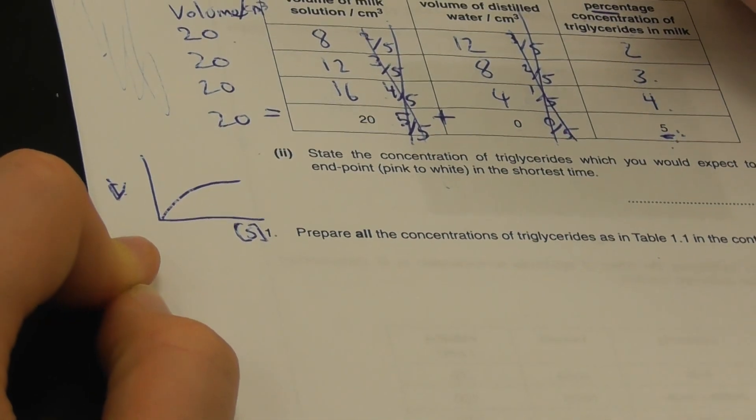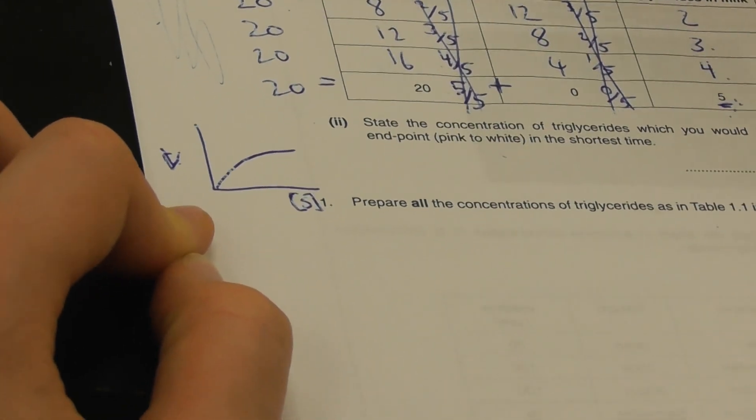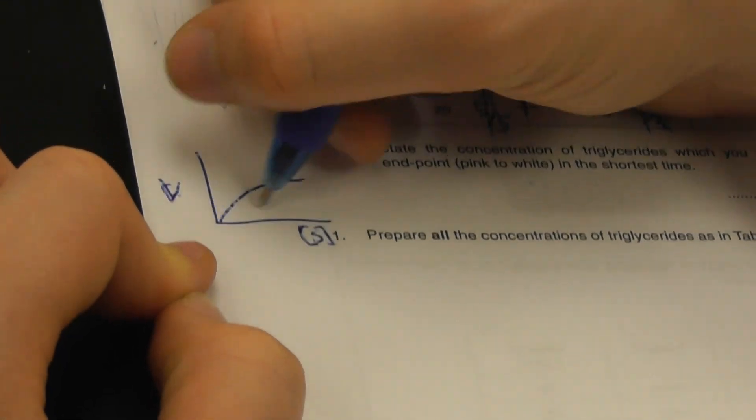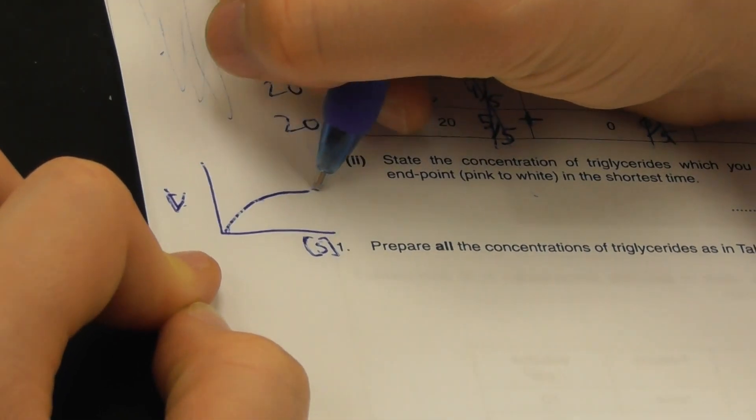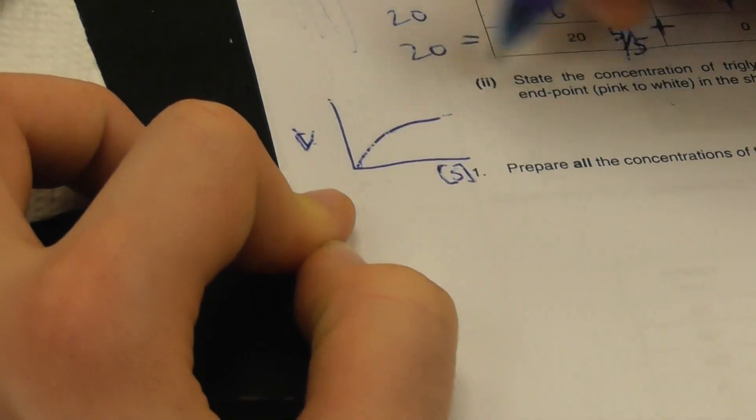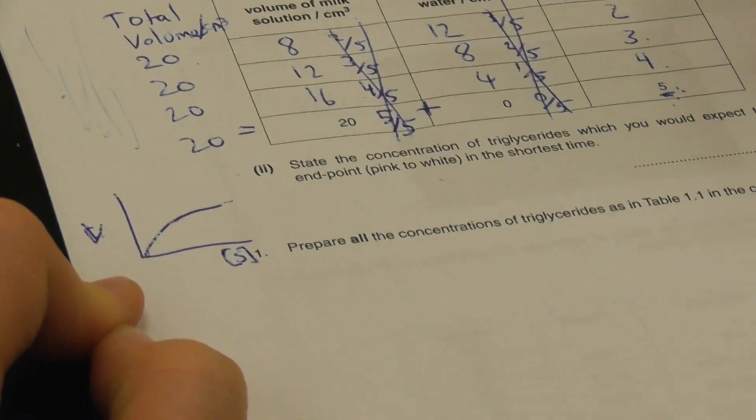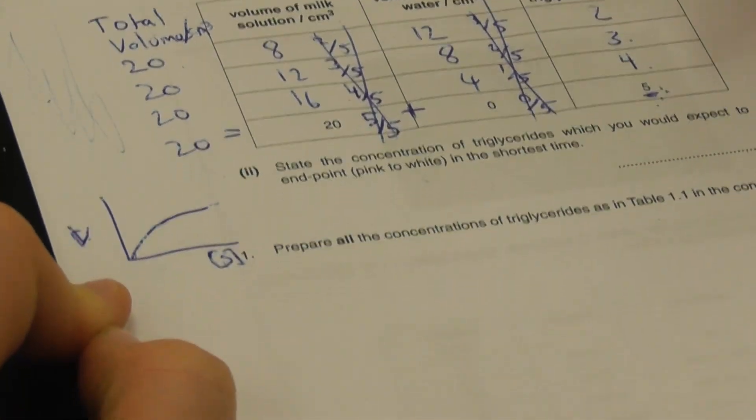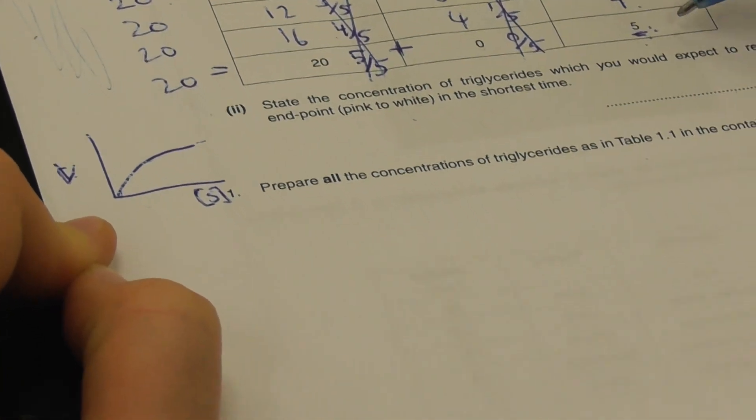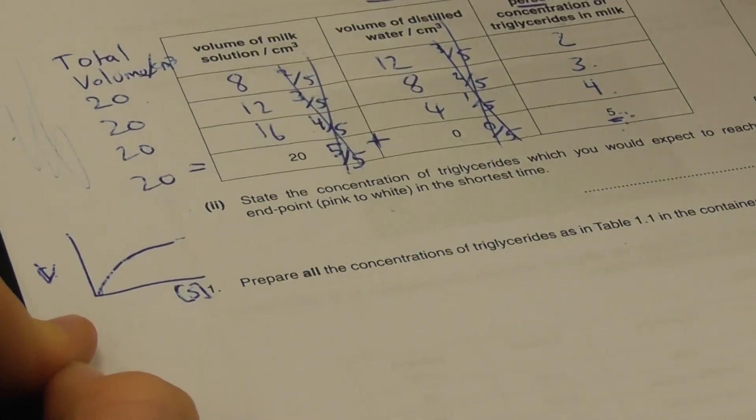That is going to be the shape of our curve. Which means what we expect is that as substrate concentration increases, our rate of reaction will increase until we reach a V max end point. So that means our substrate concentration, our highest substrate concentration, our substrate being 5% triglycerides.